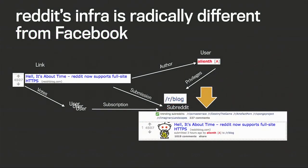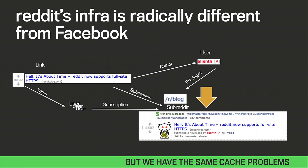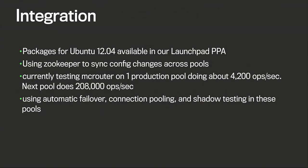So in comes McRouter. Reddit's infrastructure is radically different from Facebook, but our cache problem is exactly the same. To integrate McRouter into our setup — we're all on Ubuntu 12.04 — we built packages for McRouter and all its dependencies, which will be on our Launchpad PPA later today. We use Zookeeper to sync across all app servers and are currently testing in one production cluster running 4,200 operations per second, expanding to another cluster doing two orders of magnitude more. In those clusters we immediately benefit from automatic failover, connection pooling, and shadow testing to remove the negative experience when trying new instance types.